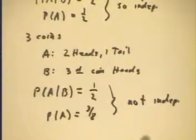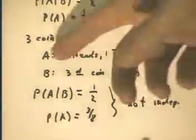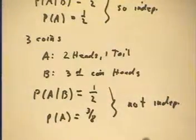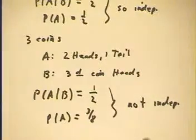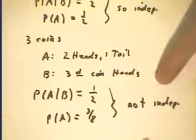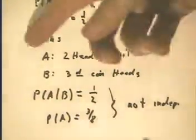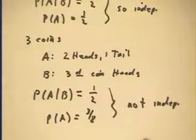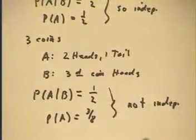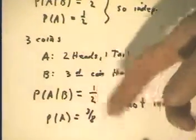If we flip three coins, let's consider whether the event of getting two heads and one tail is independent of getting heads on the third coin. Do you think knowing in advance that we get heads on the third coin will influence whether we get two heads and one tail? The probability of A given B is one half.